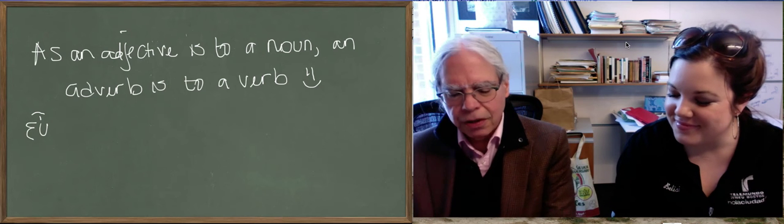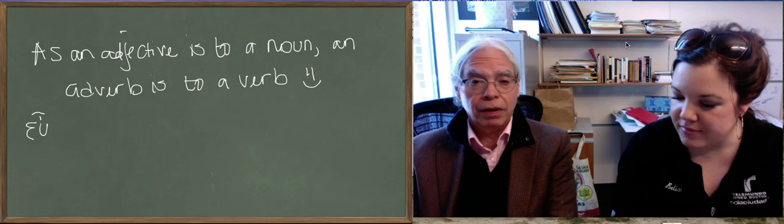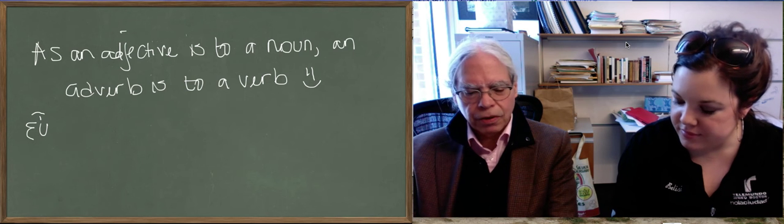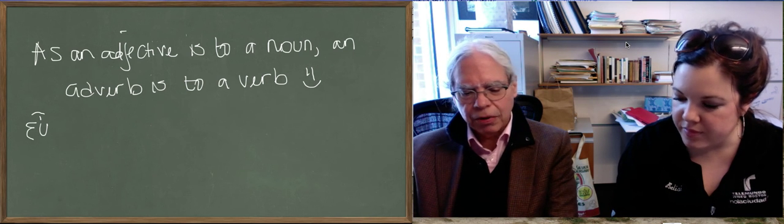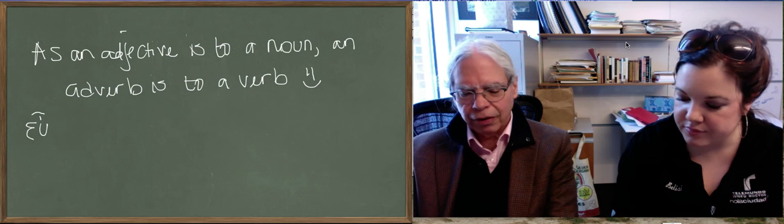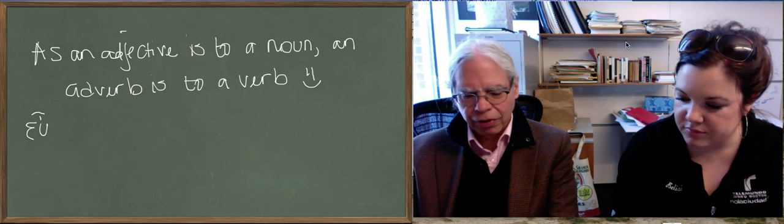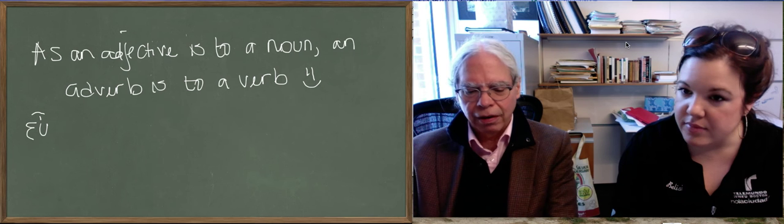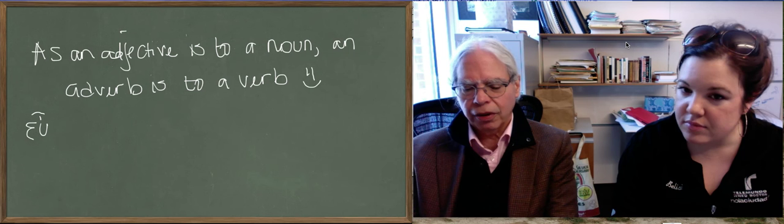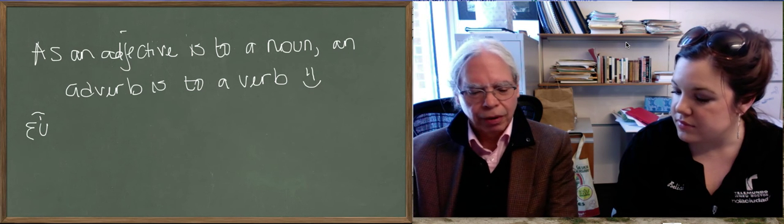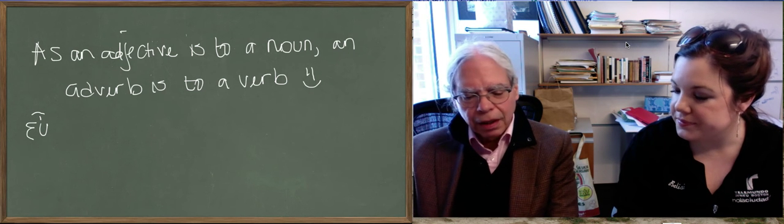Next word is a neuter noun of the second declension of the type Doron. It's zoon with an iota subscript. And it means living thing. The book translates it animal. It's a thing that's alive. And it gives us English words like zoo and zoology, stuff like that.